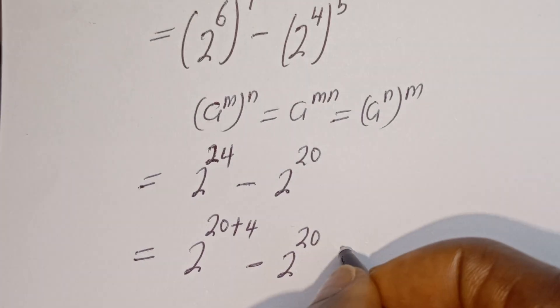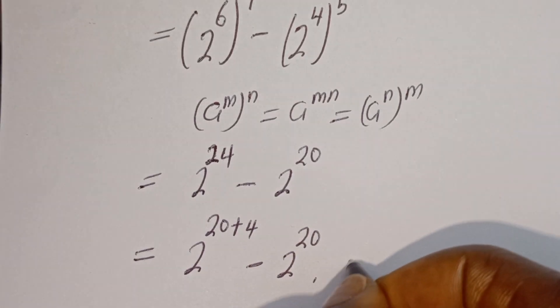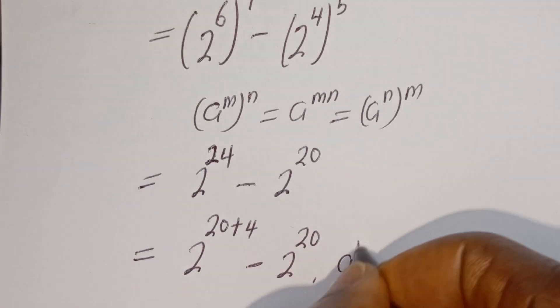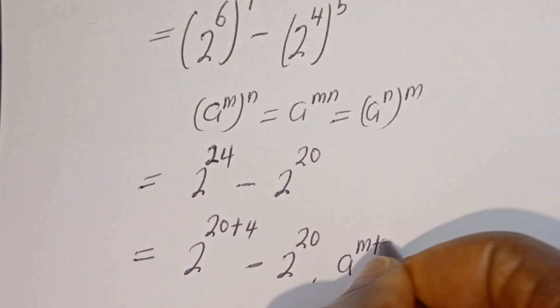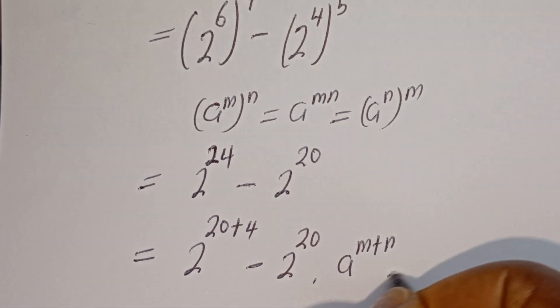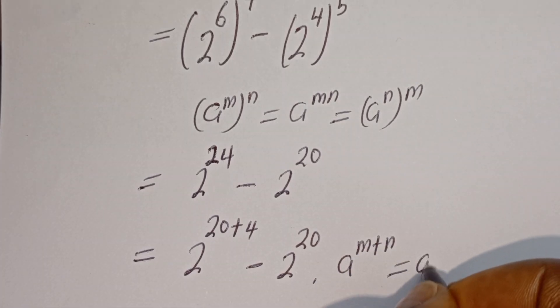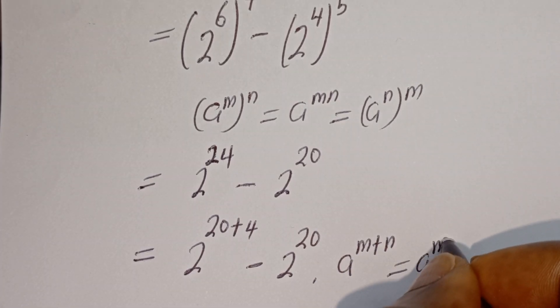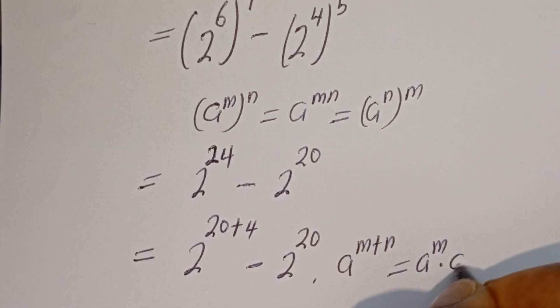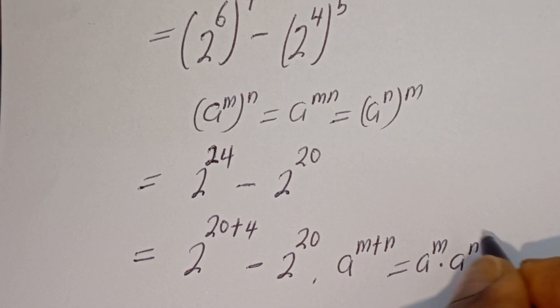Then if you have A to the power of M plus N, this is equal to A to the power of M multiplied by A to the power of N.